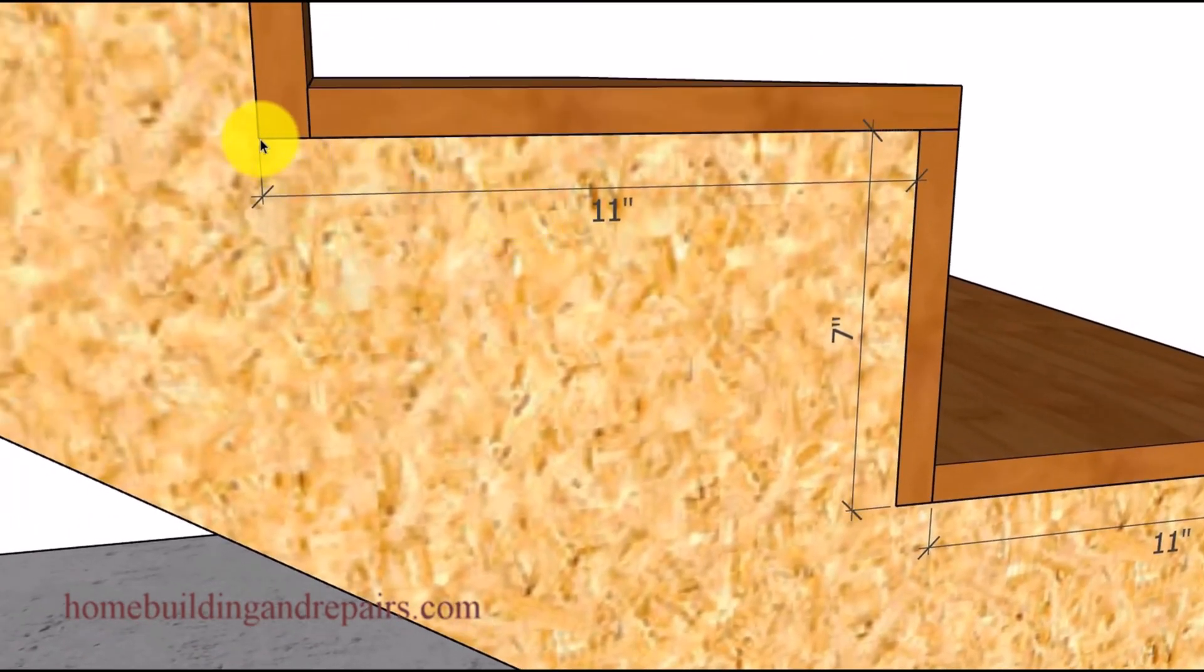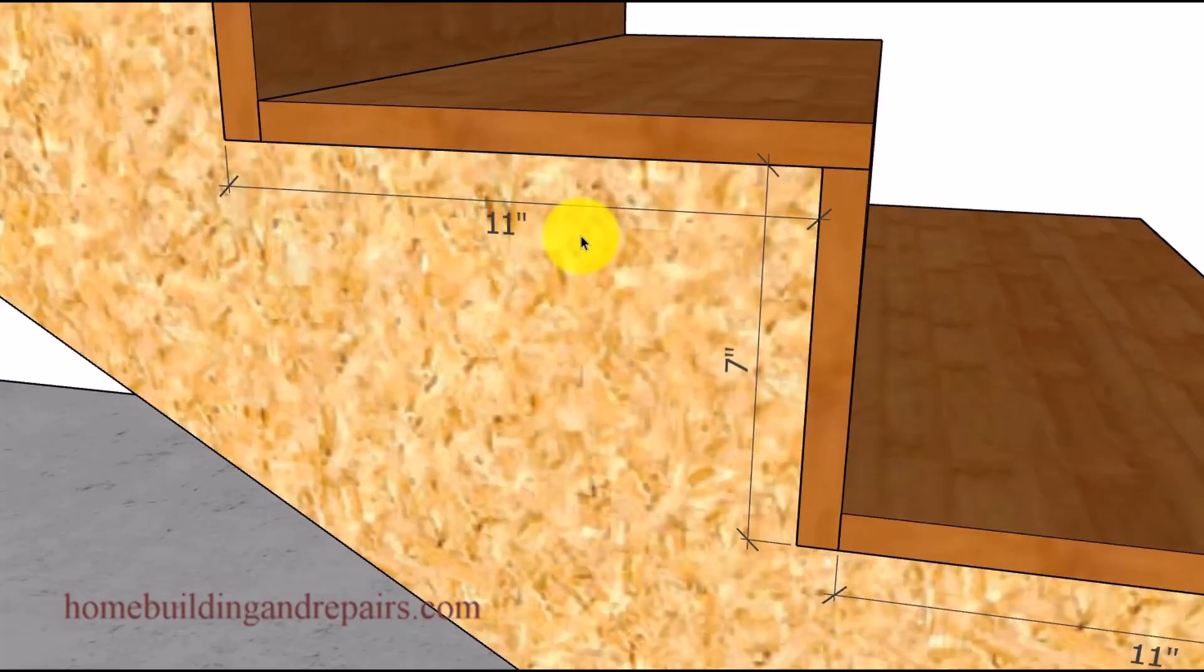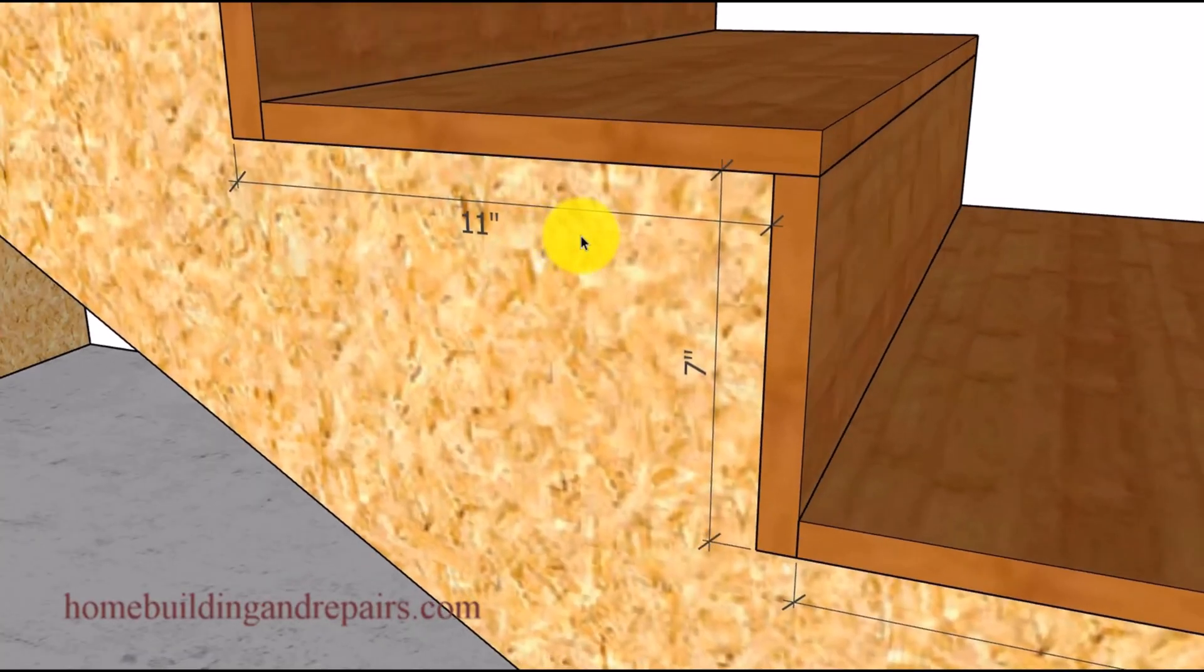Pay attention here. We're going to have 11 inches from the corner of the back of the stringer to the corner of the front, and then seven inches for our riser. Keep in mind that your measurements might be different on your stairway. However you could end up with the same problem if you're not paying attention to the information in this video.